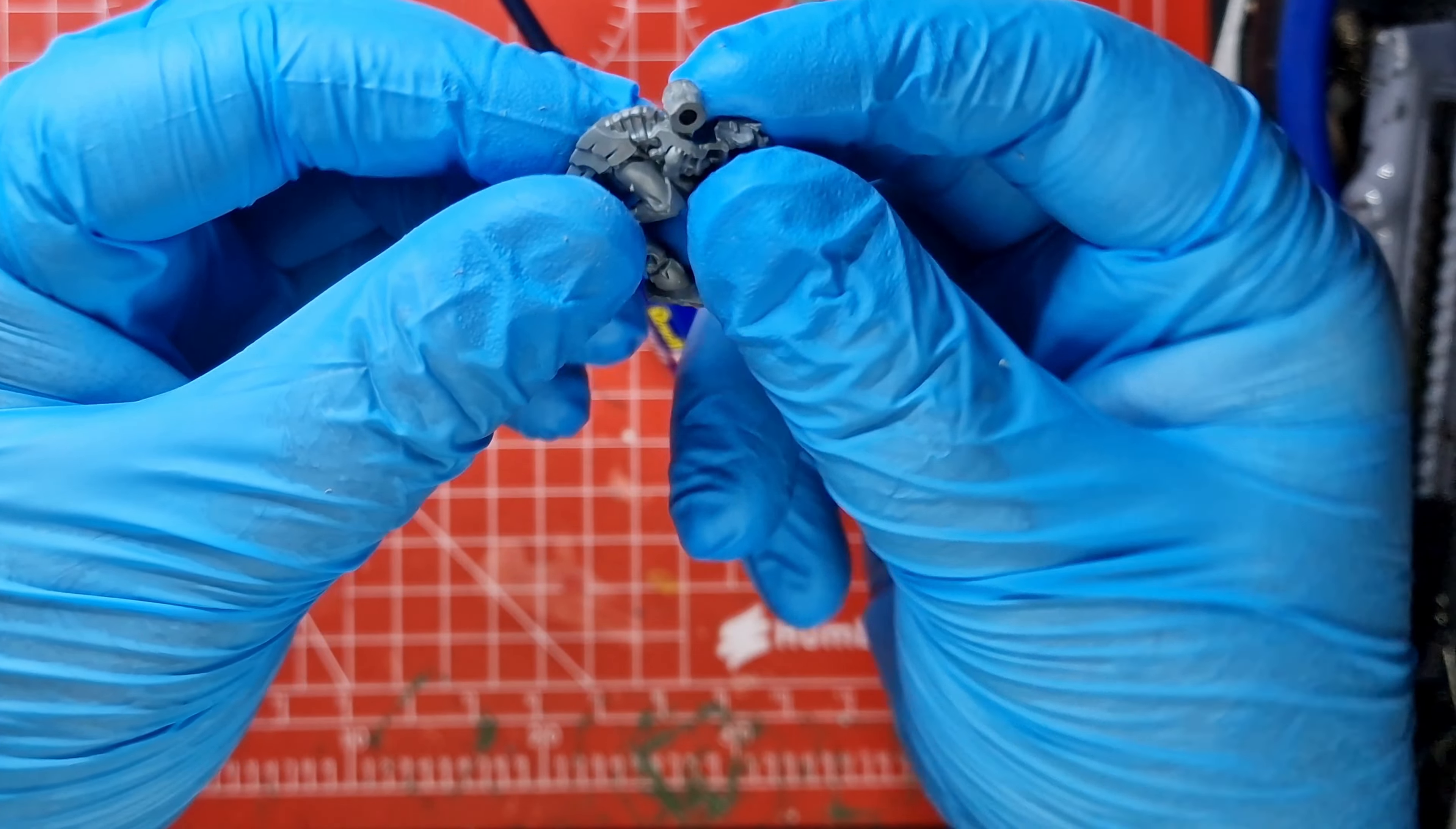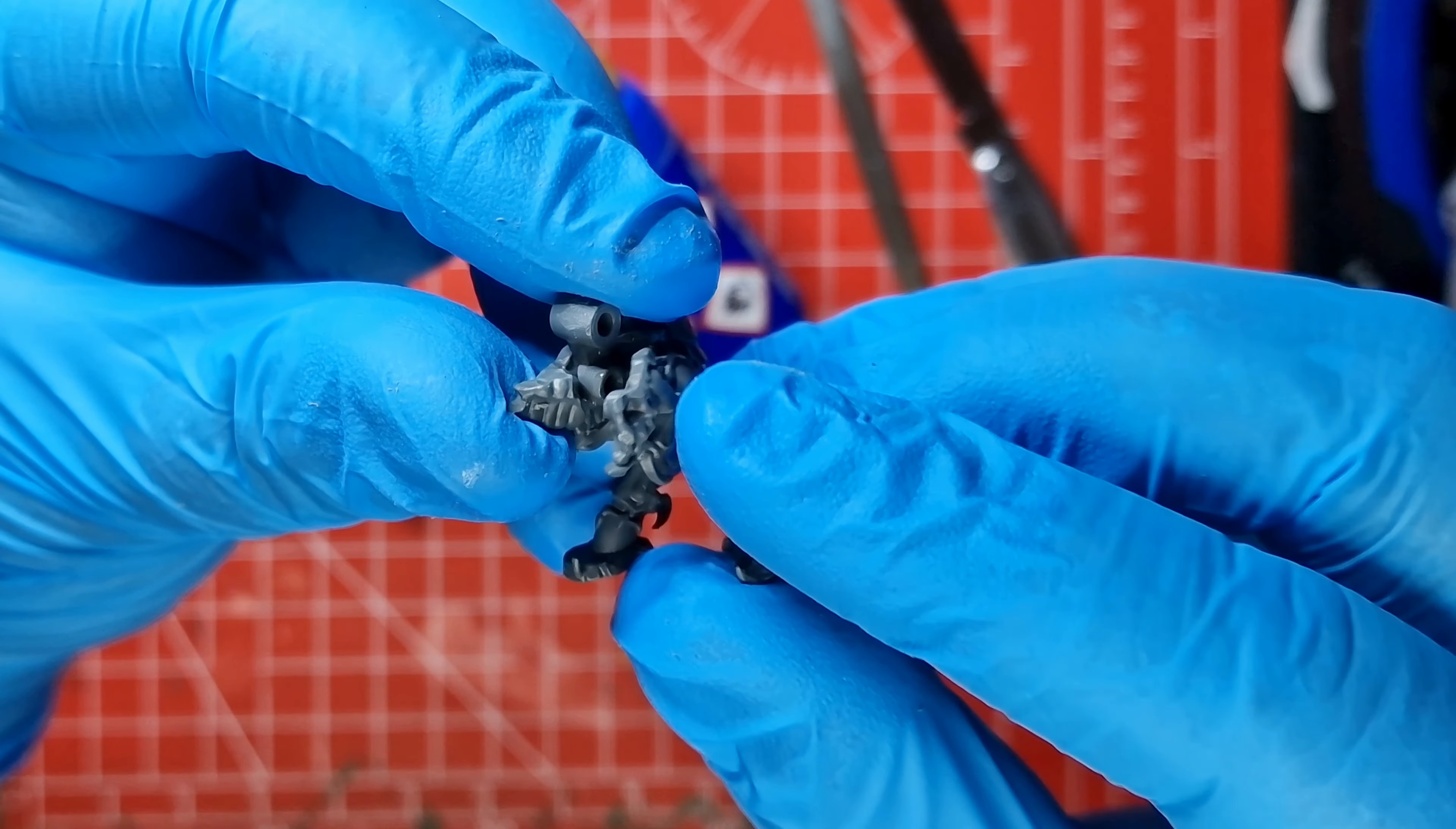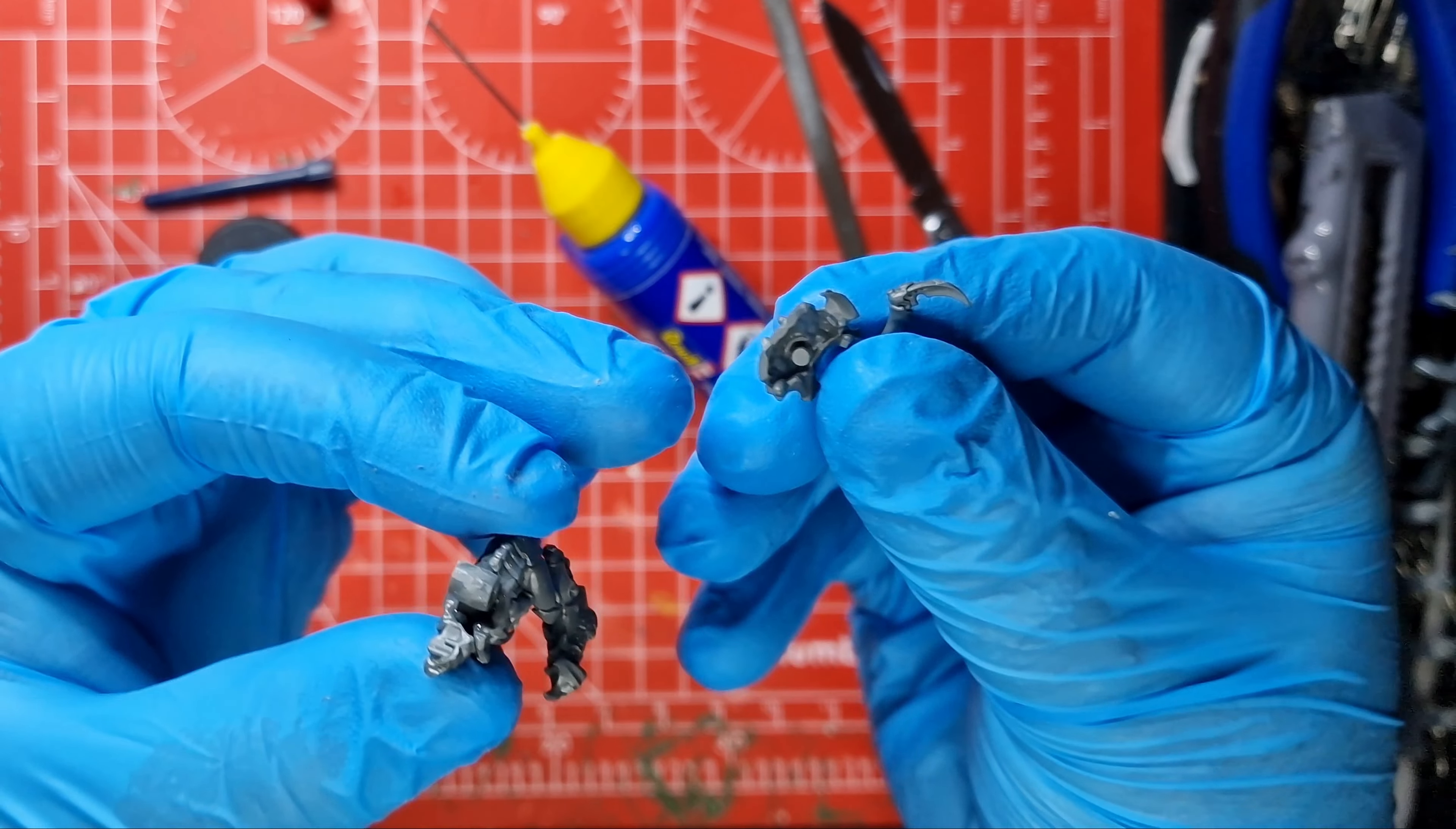So these ones, interestingly, these little model of the month, they come with a push fit functionality. Now I am a fan of the push fit, it makes it really easy and doesn't require glue. But I do like to glue them together. I've had some of my push fit models fall apart, so I've always glued them, certainly the plastic ones here. And with the push fit it just gives a nice level of security on top of the glue, making them all fit together.